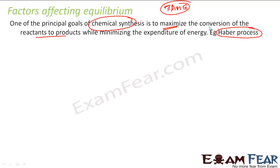We'll first try to understand all the factors that impact equilibrium, and then we'll take one or two examples where we'll see how in industry this knowledge of equilibrium and all the factors affecting equilibrium are used to produce maximum results, to produce maximum products.